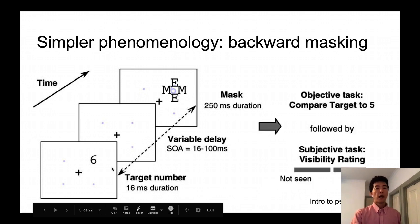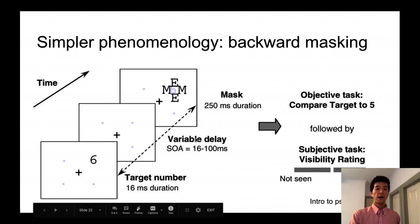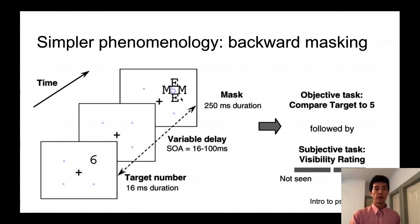And then after the 16 milliseconds of the number, there will be a blank screen in the duration of 16 to 100 milliseconds. And this delay is called Stimulus Onset Asynchrony, SOA. And then after this variable delay,